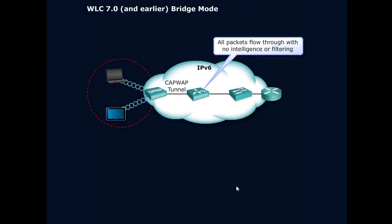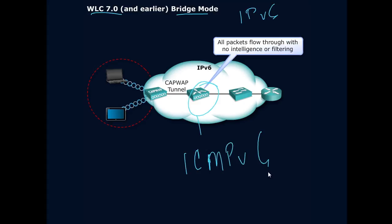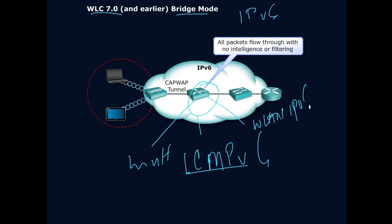Let's talk about the wireless LAN controller 7.0 bridge mode for IPv6. There was no intelligence or filtering at the wireless LAN controller. ICMPv6 packets had no type of control whatsoever at this layer. Multicast was enabled on the controller and IPv6 was enabled for the wireless LAN — that's how it worked, with no control over IPv6. That's a shame because ICMPv6 multicast messages are required for all clients to provide connectivity.